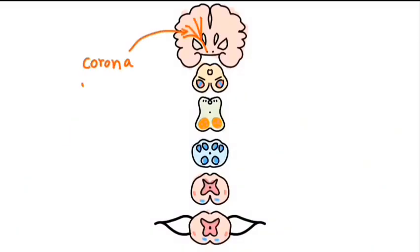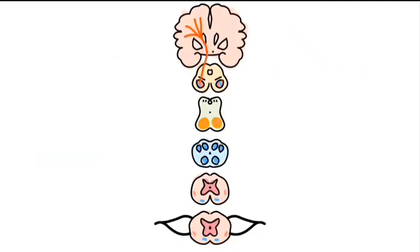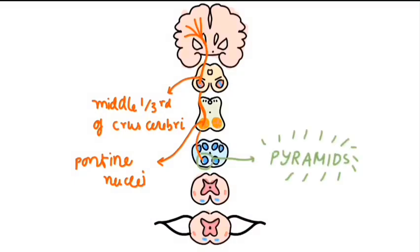They pass through the corona radiata into the genu and anterior two-thirds of the posterior limb of the internal capsule, from where they descend downwards into the middle one-third of the cerebral peduncles. The tract continues down the anterior aspect of the pons and into the medulla, where the fibers create visible prominences called the pyramids on its anterior surface.